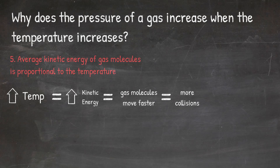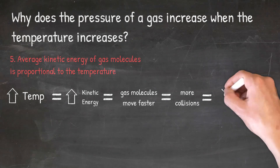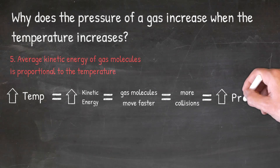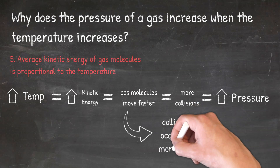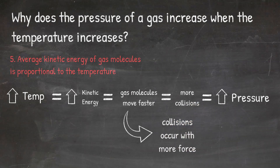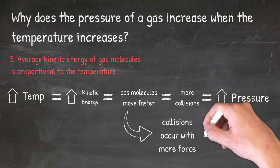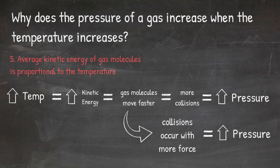As the gas molecules move faster, this results in more collisions between the gas molecules and the inside surface of the container. Because the gas molecules are colliding with the inside surface more often, this results in an increase in pressure. We also have an increase in pressure due to the force of the collisions — the gas molecules are moving faster, so each collision occurs with more force, which also increases the pressure.